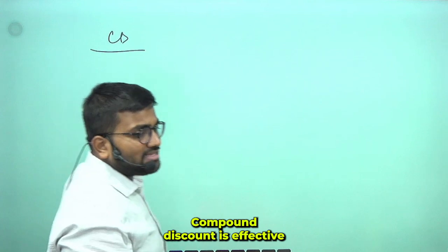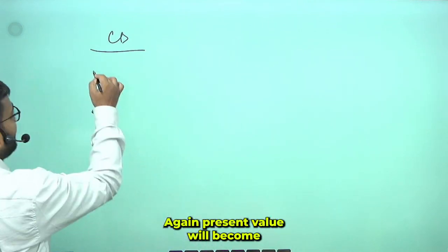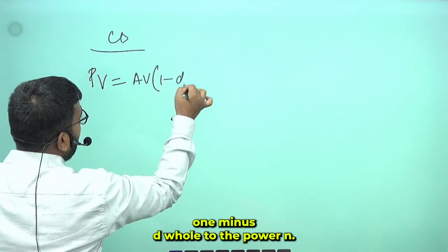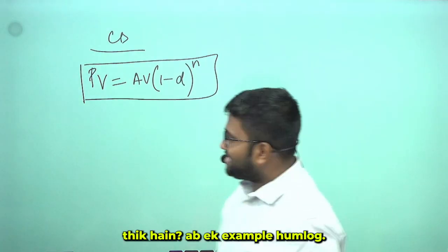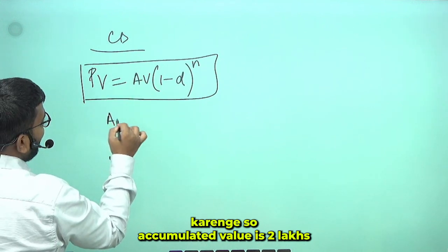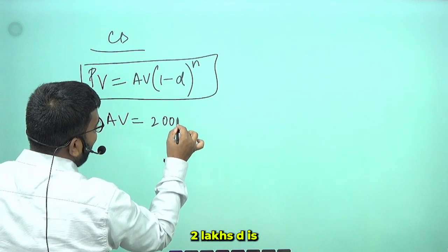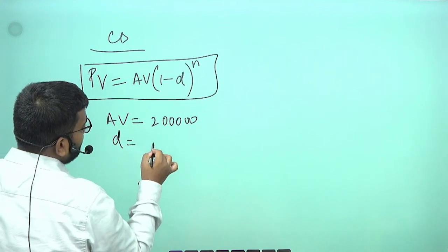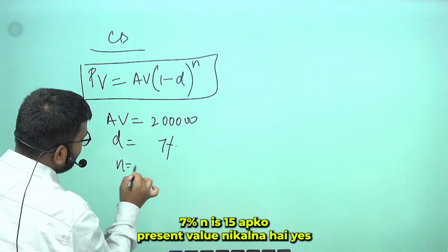In compound discount, the effective rate of discount is d. The present value becomes the subject, and the accumulated value formula is: Accumulated Value = PV × (1 - d)^n. For example, the accumulated value is 2 lakhs, d is 7%, and n is 15.